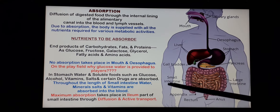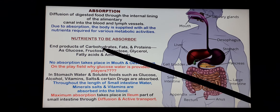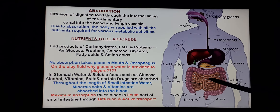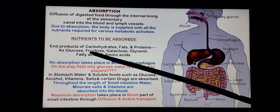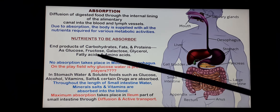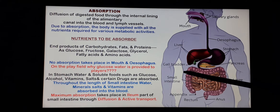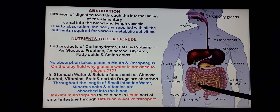During digestion, the nutrients which were complex — like carbohydrates, fats and proteins — have been digested and broken down into simple diffusible glucose, fructose and galactose from carbohydrates; glycerol and fatty acids from fats; and amino acids from proteins. This digestion is completed only in the last part of the alimentary canal, that is the ileum.